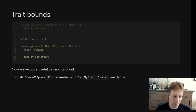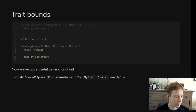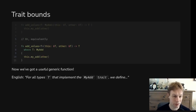The general problem we were solving is: how can I write an add function where I don't have to do it differently for every single type? At some point you do need to define how you actually do this operation, and that's what happens inside myAd.